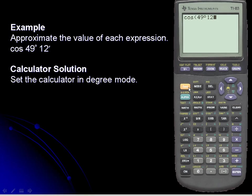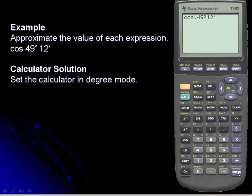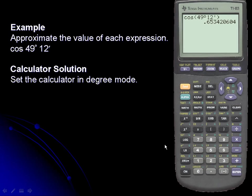I'll go back into the angle section of the calculator for 12 minutes. Minutes is the second choice, so I'll press enter. I'll close off the argument for cosine and press enter once again for a result of 0.65342.